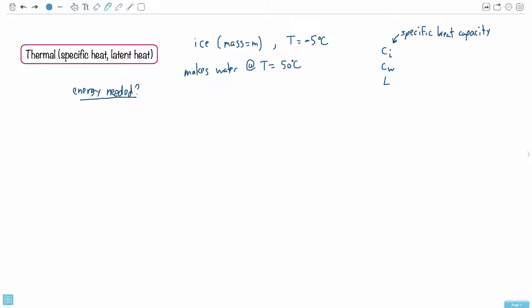Now you're told some things. You're given Ci, the specific heat capacity of ice. You're also told CW, that's the specific heat capacity of water. And then we have L here, which is the latent heat of fusion. What's really important is to know how to use these.